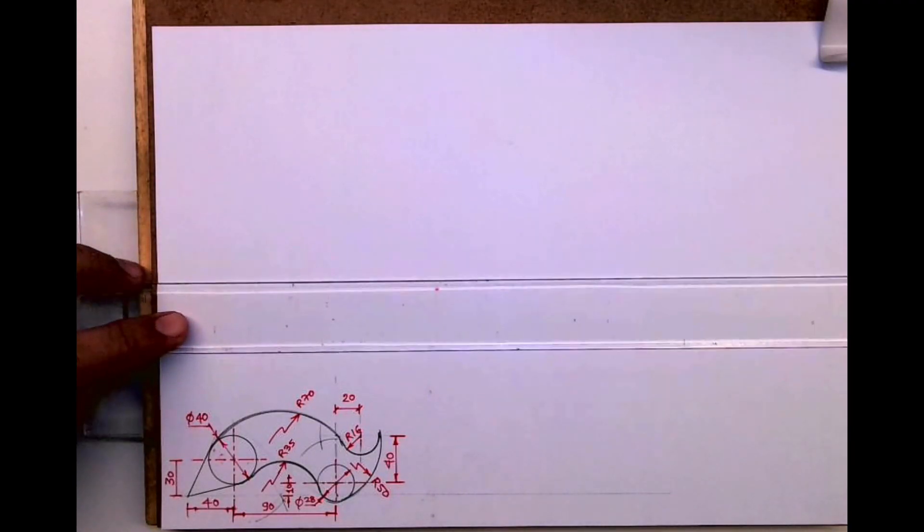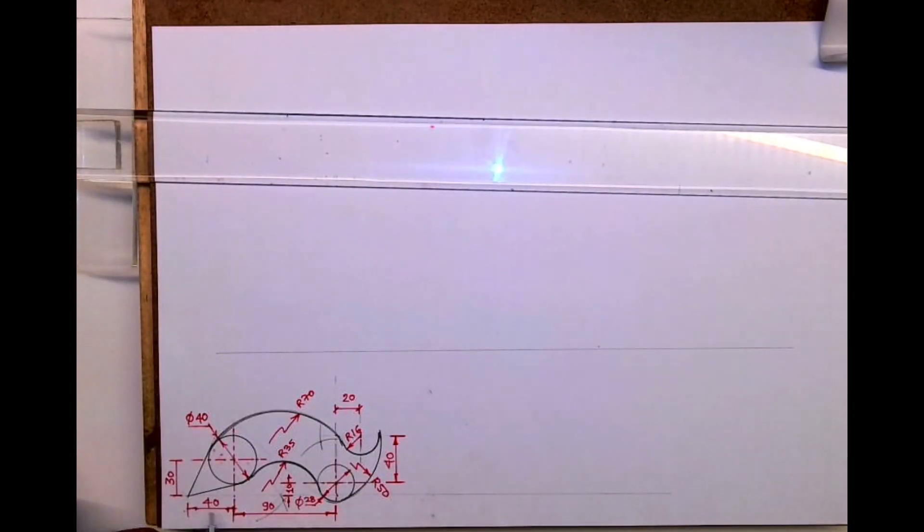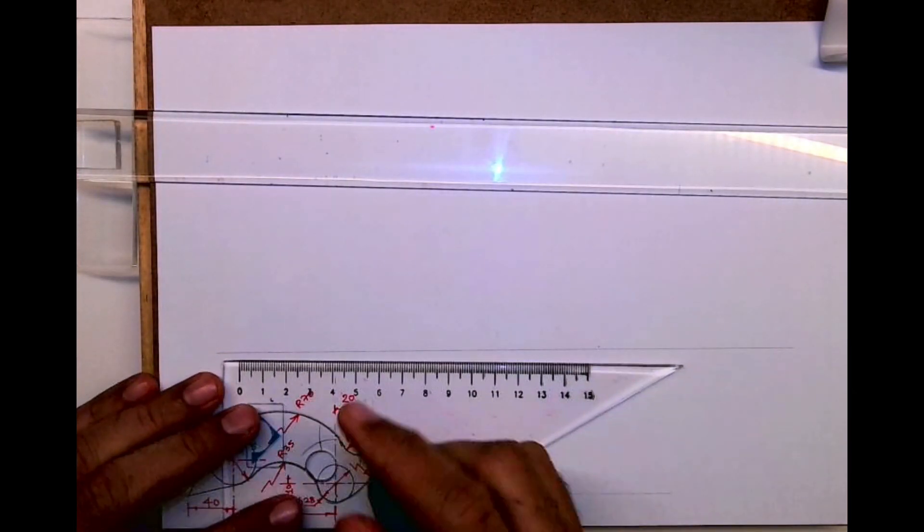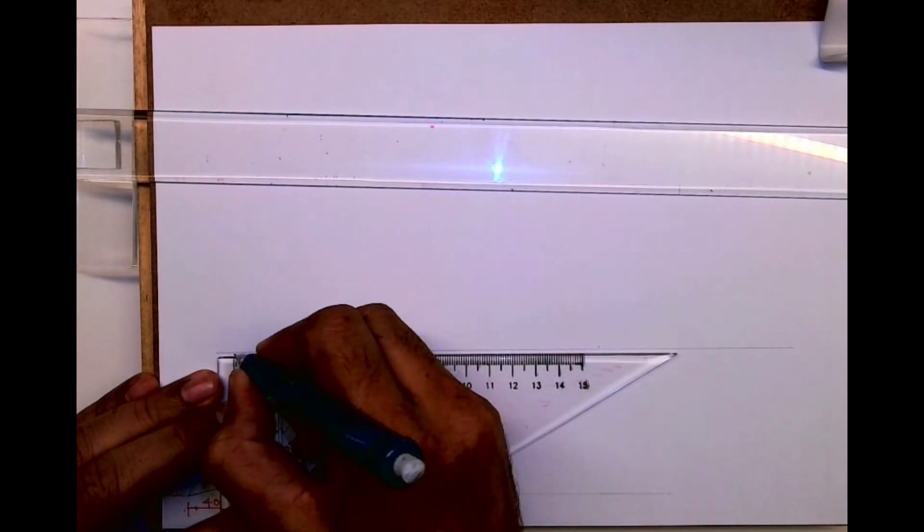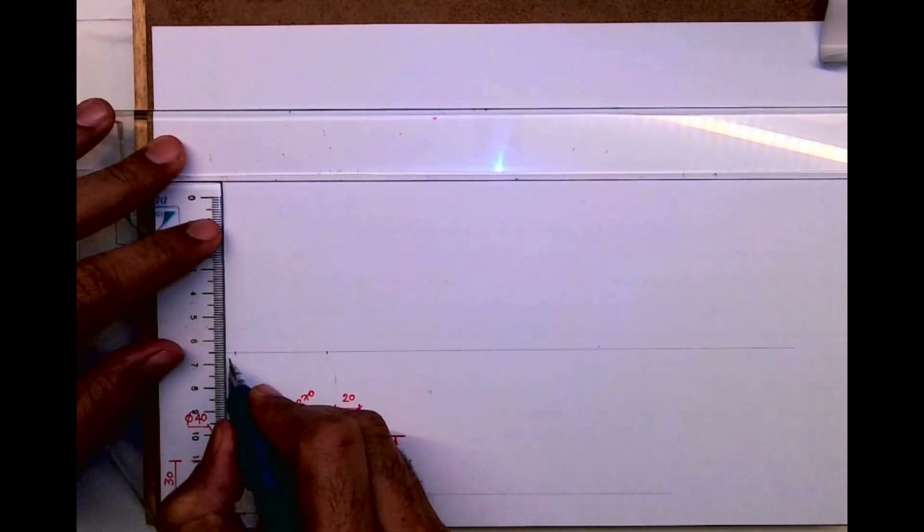Welcome to technical drawing. Today we'll see this sum in machine drawing. First we'll draw a horizontal line. Now if you see, this is 40, so I will mark 40, and height is 30.